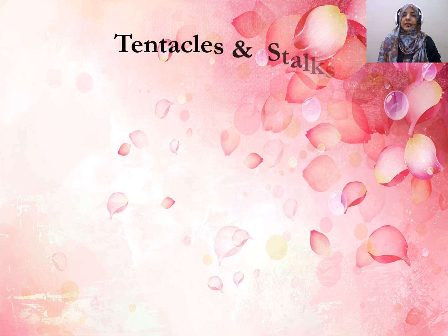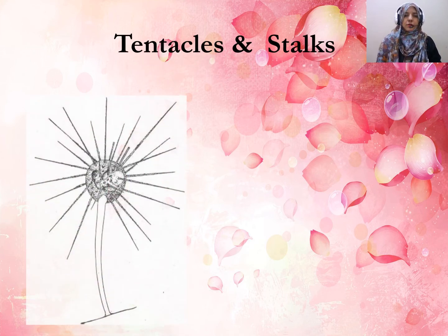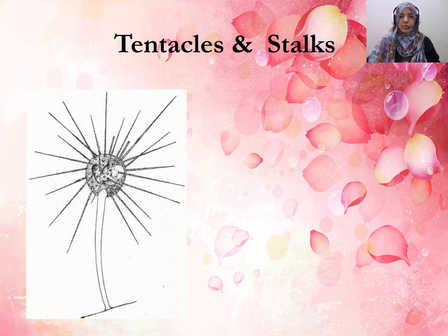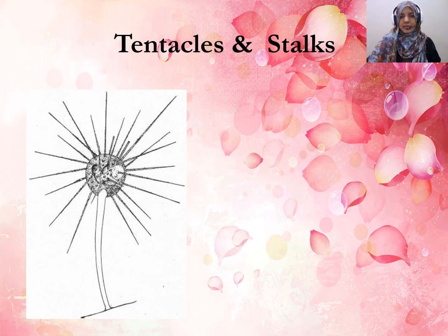Acineta has tentacles and a stalk. The stalk is attached to the substrate, and the tentacles extend outward for feeding.